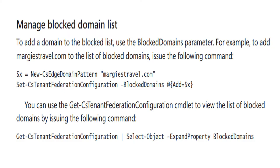Managing Block Domain List. To add a domain to the block list using PowerShell, use the Block Domains parameter. For example, to add margistravel.com to the list of blocked domains, you issue the command shown on the screen. You can also use the Get-CS Tenant Federation Configuration cmdlet to view the list of blocked domains by issuing the command shown on the screen.